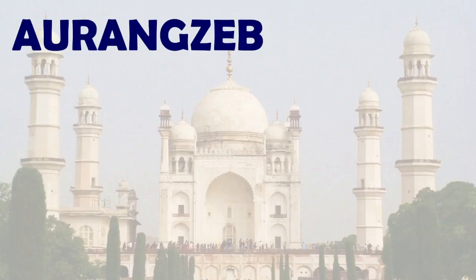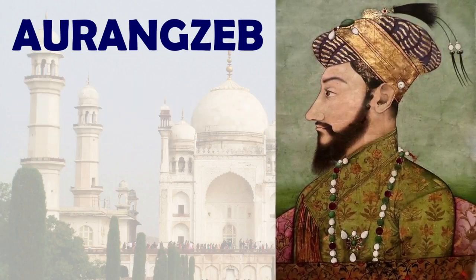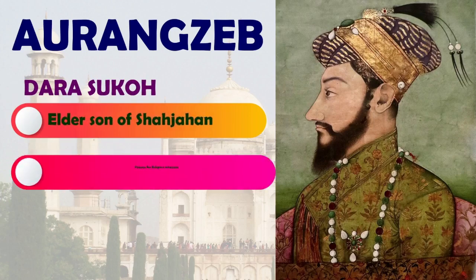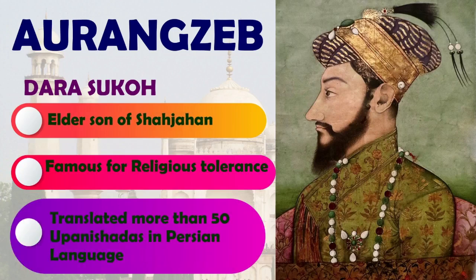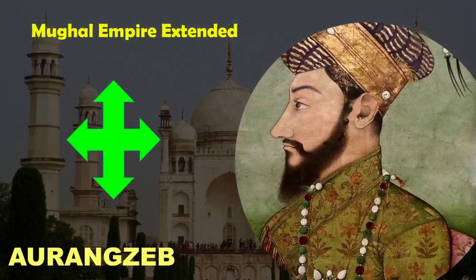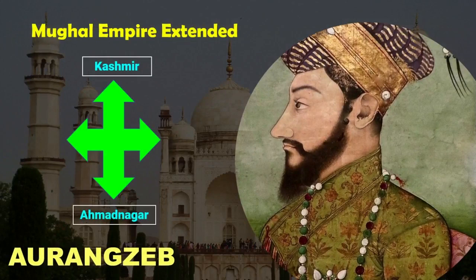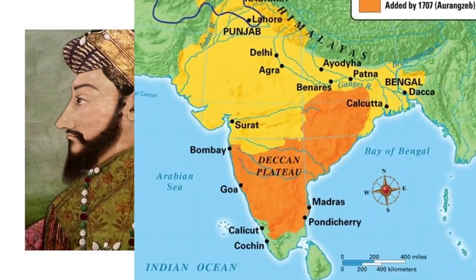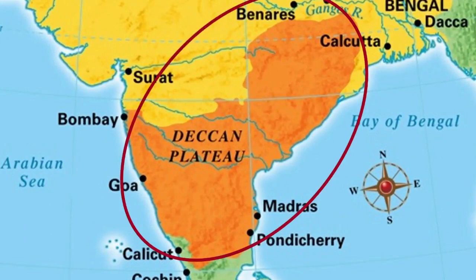Aurangzeb won the wars of succession amongst the other sons of Shahjahan and became the emperor by detaining his father in 1658 CE. Dara Shukoh, the elder son of Shahjahan, was famous for religious tolerance. He translated more than 50 Upanishadas into the Persian language. When Aurangzeb became the emperor, the Mughal Empire extended from Kashmir in the north to Ahmadnagar in the south, and from Kabul in the west to Bengal in the east. To this, Aurangzeb added Assam in the east, and the regions of Adil Shahi of Bijapur and Kutub Shahi of Golconda in the south, after he ended these kingdoms.